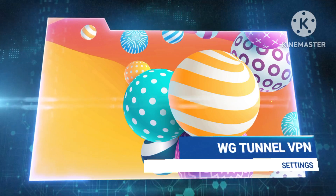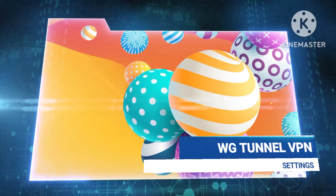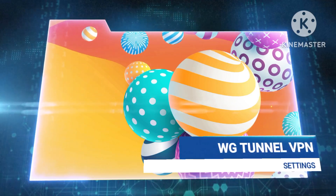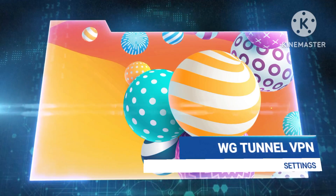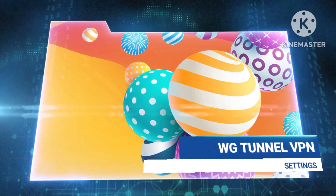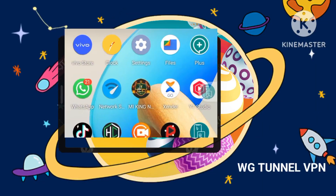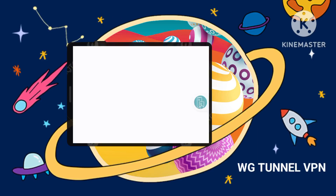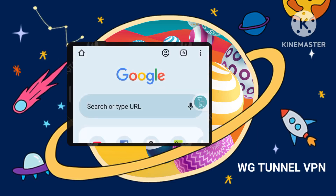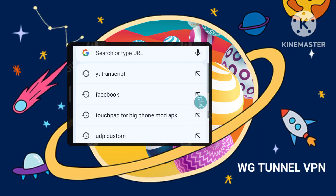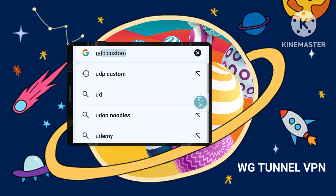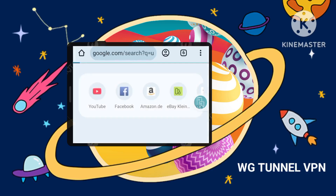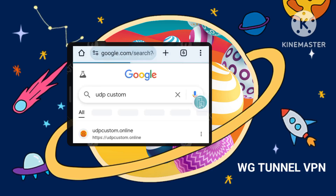Step 1: Finding a reputable custom UDP service. Open your web browser, like Chrome or Safari. Search for UDP Custom and click on the official UDP Custom website. Make sure the website looks legitimate and trustworthy.